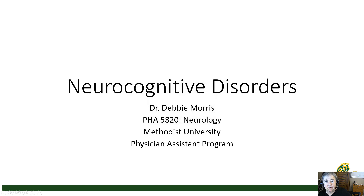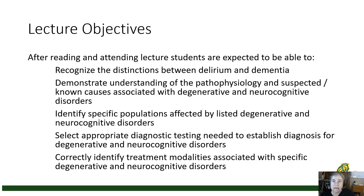Hello, this is Lecture 6 in Neurology. We're going to be talking about neurocognitive disorders: delirium, dementia, and a number of diseases that I would call neurodegenerative, although not everything we're talking about today falls into that category. The essential lecture objectives are to understand the difference between delirium and dementia, understand a number of conditions including pathophysiology, causes, who is affected, risk factors, how we test for them, how we establish the diagnosis, and a little bit about treatment.